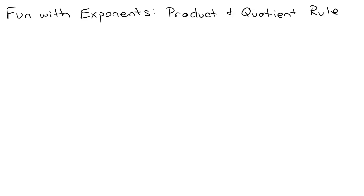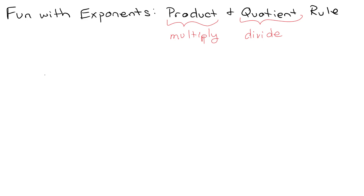Let's start out and have fun with some exponents — mostly the product rule and the quotient rule. These are the fundamental things you need to know when doing exponents. Before you get freaked out: product means multiply and quotient means divide. A lot of times you'll be given a whole list of properties to memorize, but rather than memorizing them, let's learn them so we don't have to actually memorize them.